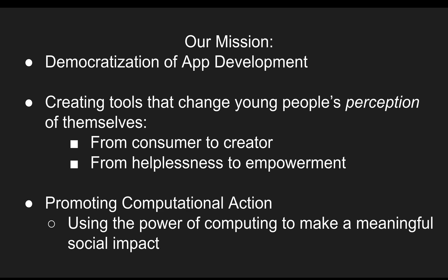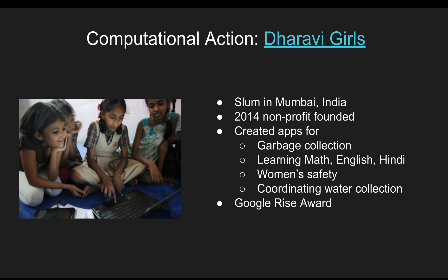The first example is from Mumbai, India. There's a slum called Dharavi, and in 2014 a nonprofit was founded with the aim of teaching young girls programming and specifically building apps. They used MIT App Inventor for this purpose. The girls created some very interesting community-related applications such as coordination of garbage collection, learning math, English, and Hindi skills — especially for those without access to education — apps about women's safety, and apps about coordinating water collection so there are no long lines in their community. Google awarded this effort with the Rise Award.